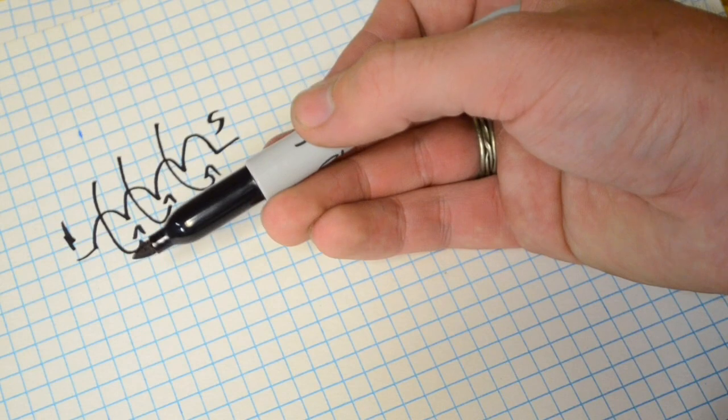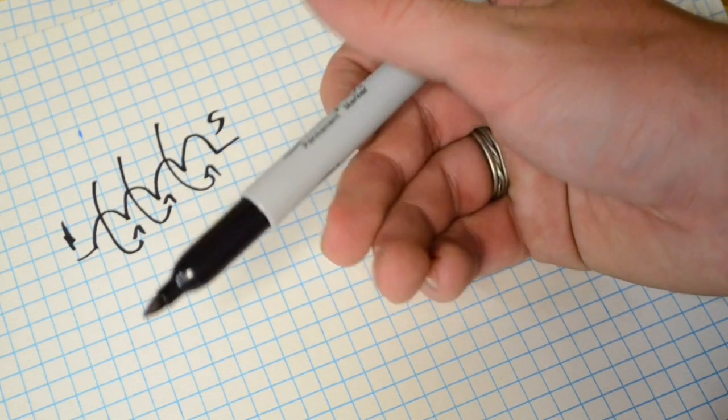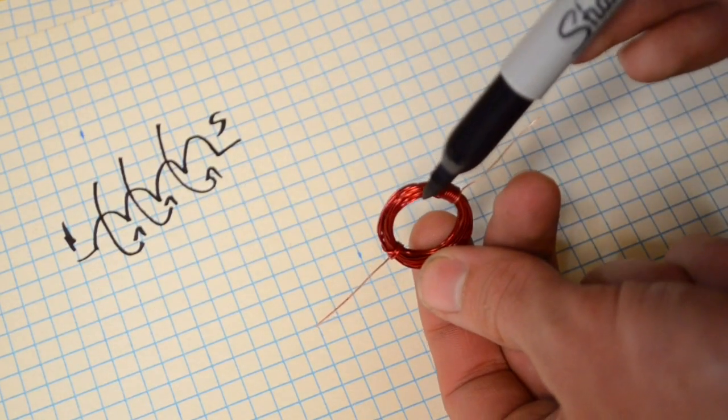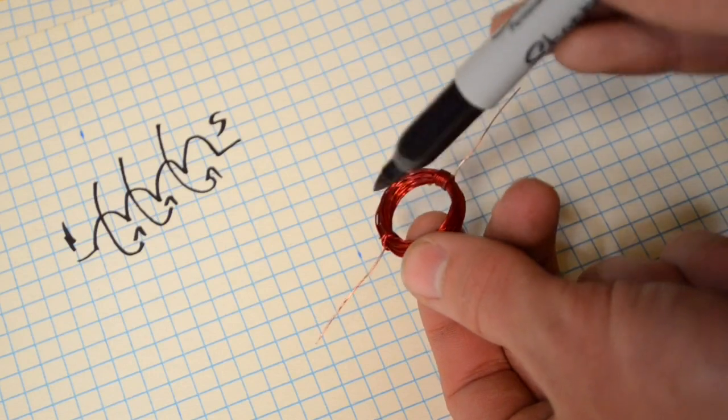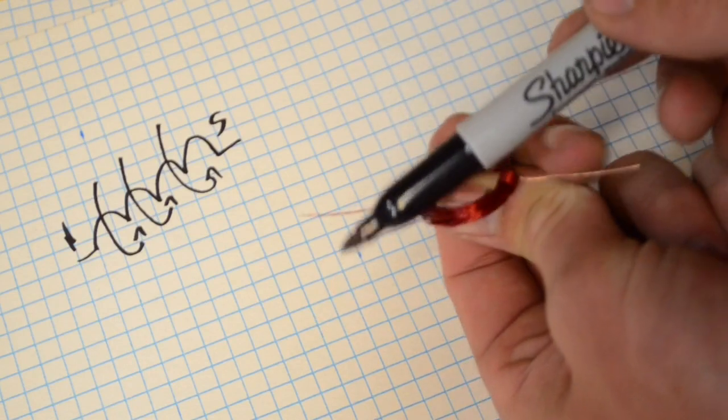As I'm sure most of you know, north repels north and south repels south, and north is attracted to south. And so if we go back to this coil, it's creating a magnetic field in such a way that one side, like this side, would be north, and then this side would be south.